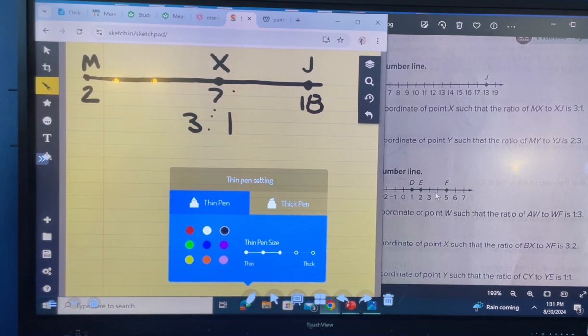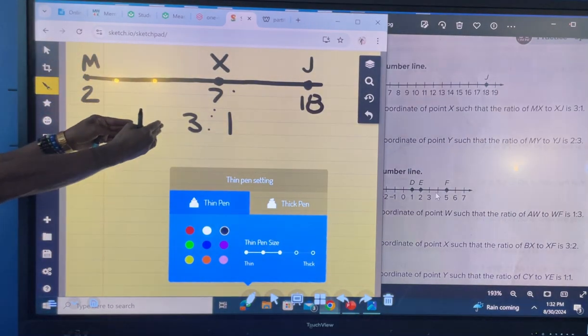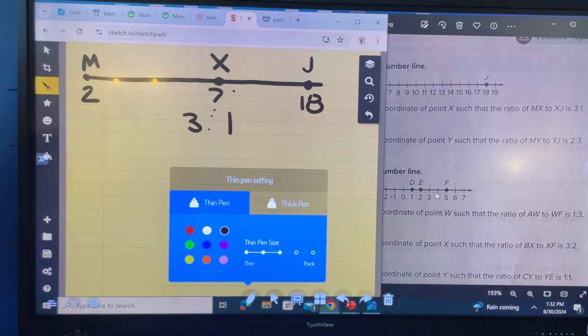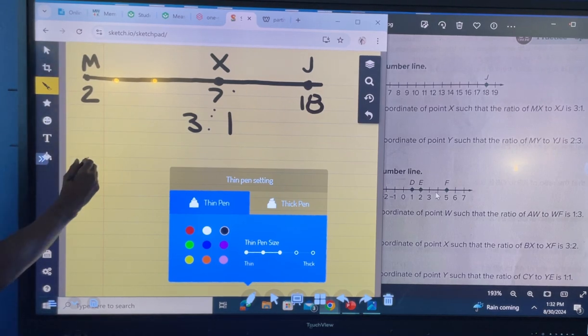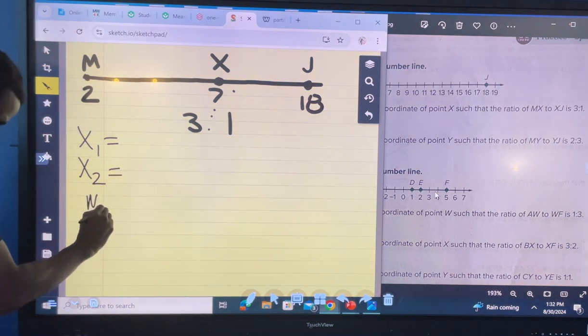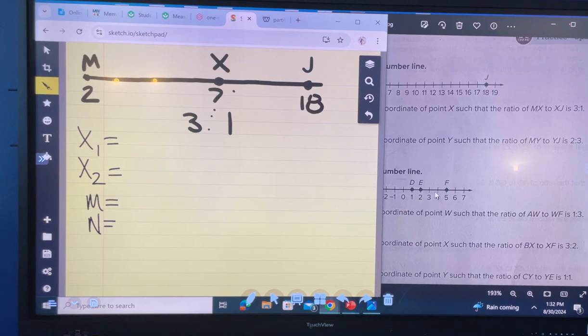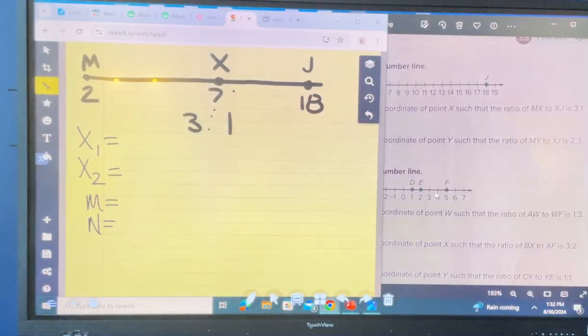Who's lost? Y'all seeing what we're doing? Yes? Yes. We got to give the point, the precise point of where X is going to fall in between M and J, but it's got to be a ratio of 3 to 1. So using our notes, let's label everything out. What's X1? What's X2? What's the M? What's the N? And we know what the formula is.